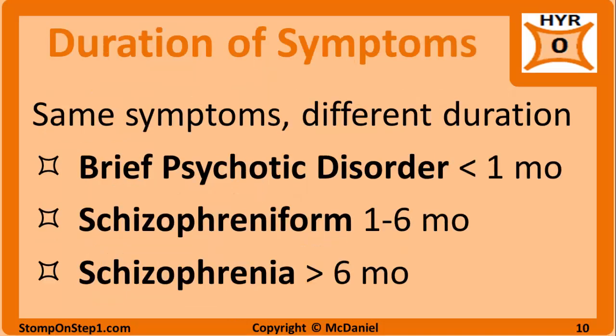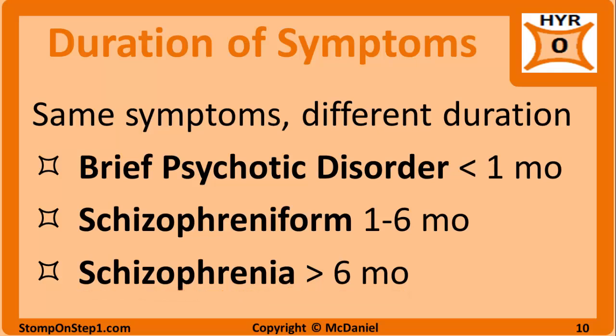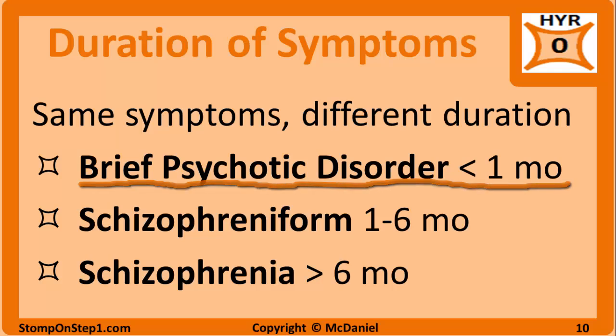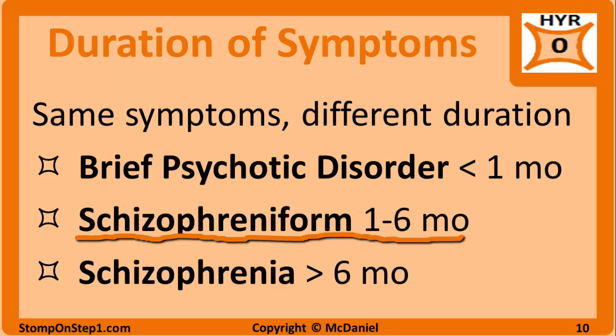The same group of symptoms are associated with different diagnoses based on their duration. According to the DSM, schizophrenia must have symptoms that persist for more than six months. If symptoms are present for less than a month, that is referred to as brief psychotic disorder, and symptoms lasting one to six months is schizophreniform disorder.